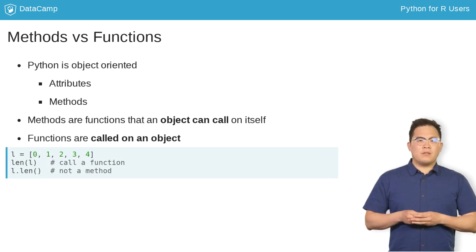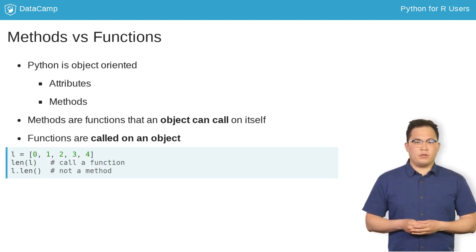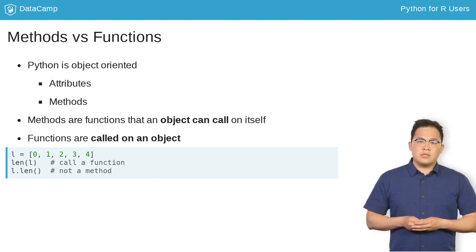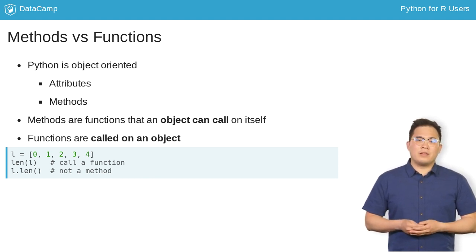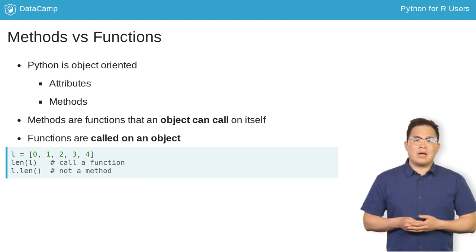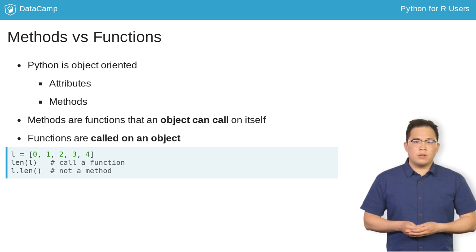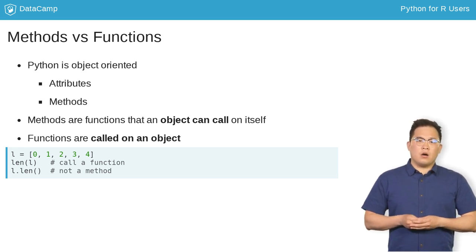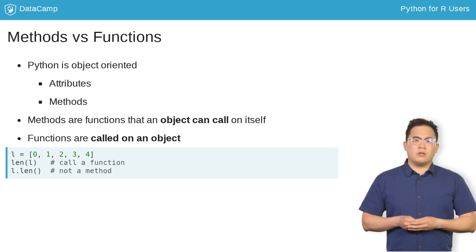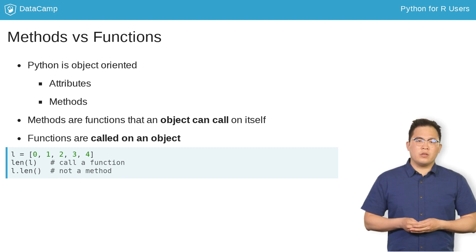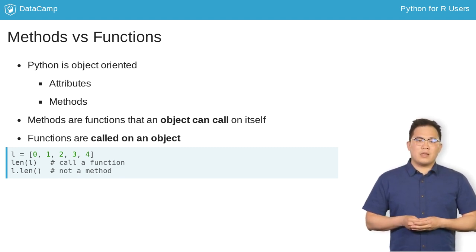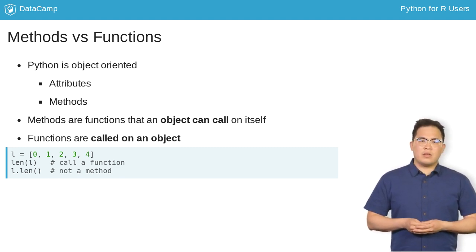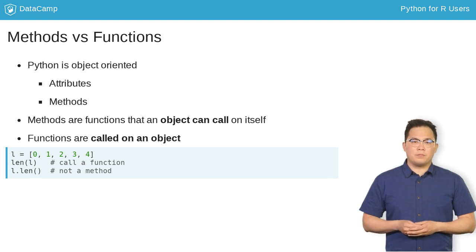Methods and functions have similar behavior, but they are different. The differences stem from the fact that Python is an object-oriented programming language. This means that all variables, lists, and other data structures that you create are objects, and these objects can have attributes and methods associated with them.